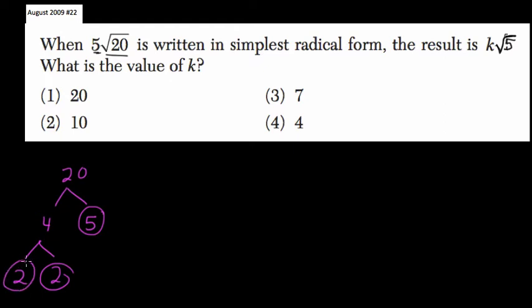And realize here we have 2 times 2 times 5, and that's 4 times 5, so that means 20 equals 4 times 5.